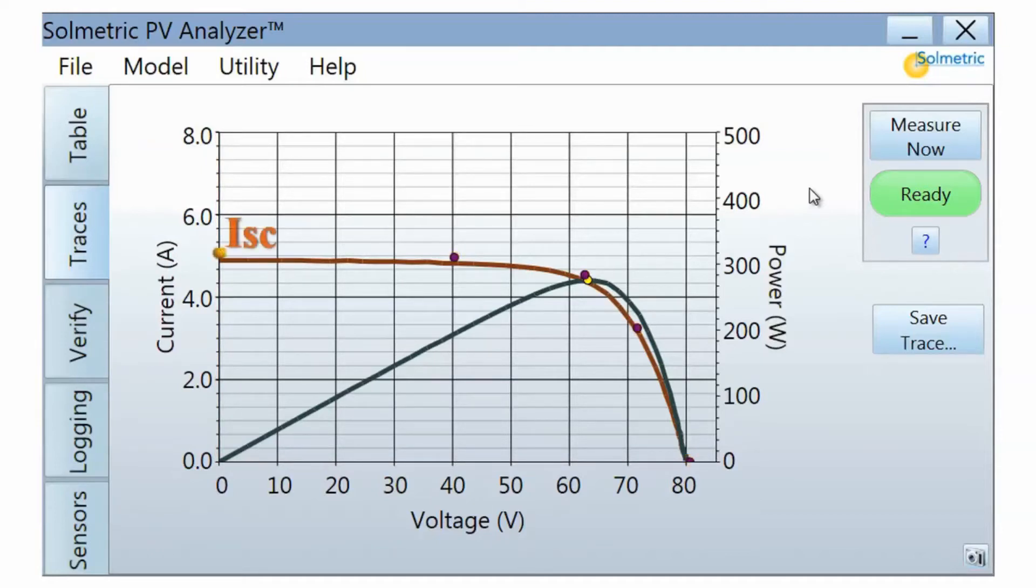The first dot is the predicted short circuit current. The third or middle dot is the predicted maximum power point. The fifth or last dot is the predicted open circuit voltage. Two additional dots are also provided to further define the shape of the predicted curve.